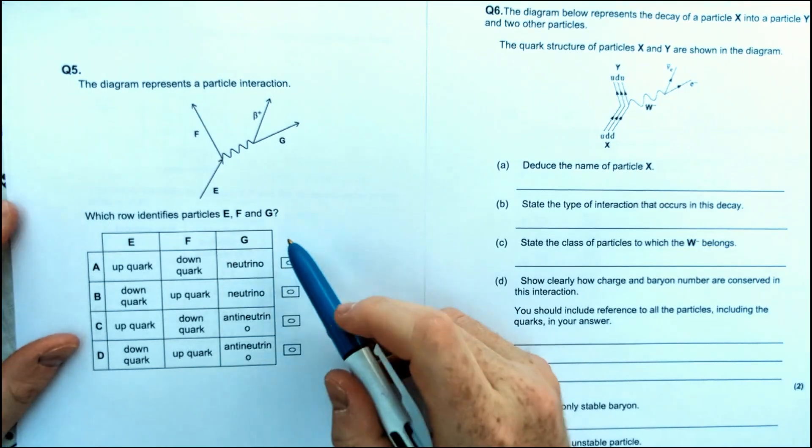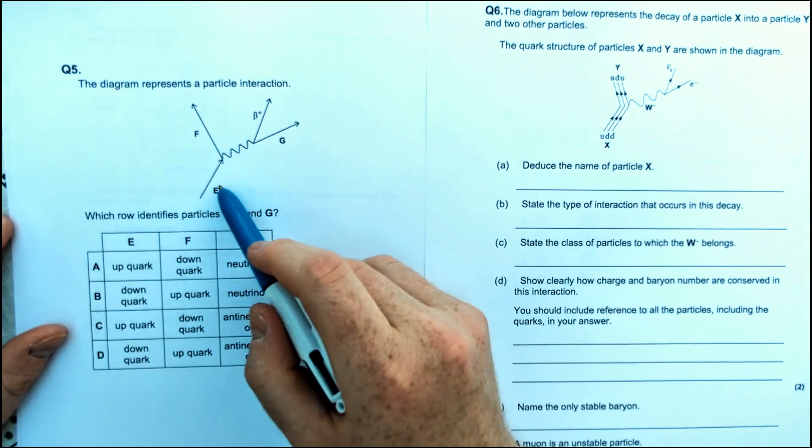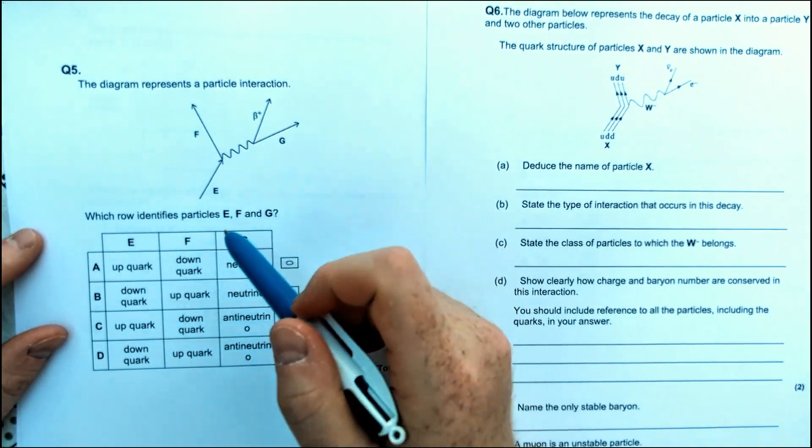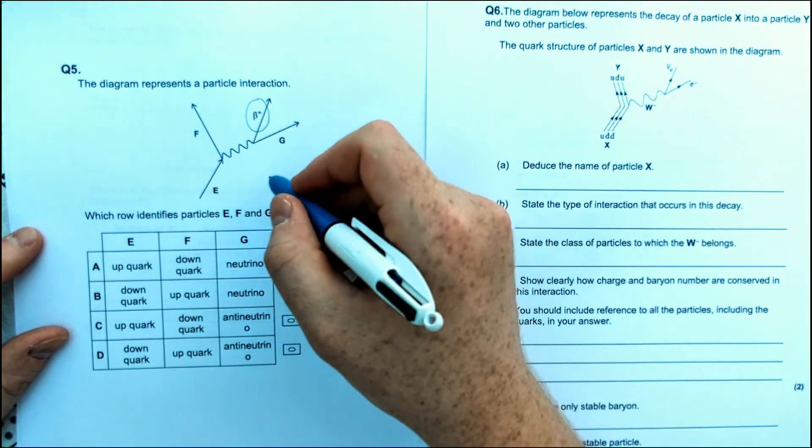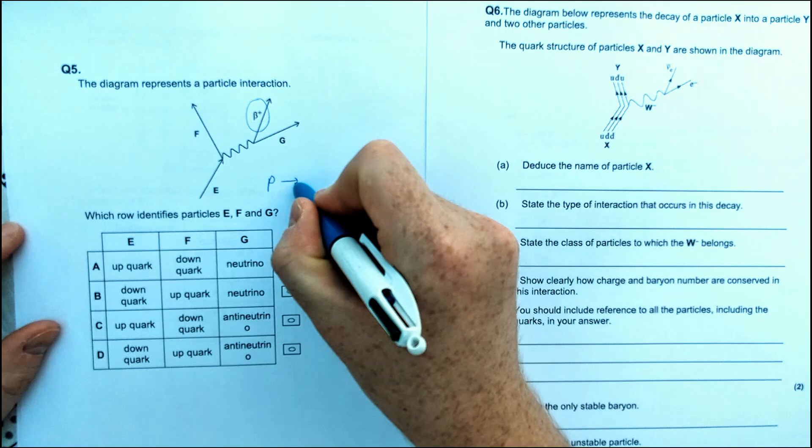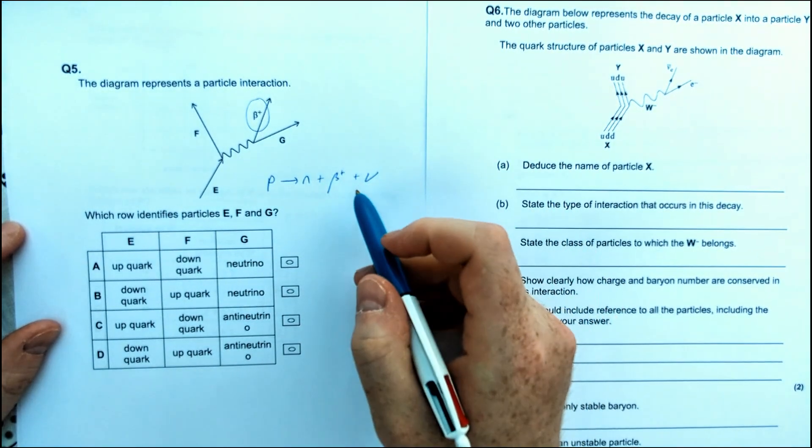This question is all about Feynman diagrams, identifying what the points are, what the particles are here for this particle interaction. So it doesn't tell us anything really apart from the start, apart from that it's positron emission. So we need to know the equation for positron emission. That's a proton turned into a neutron, plus a positron, plus a neutrino.